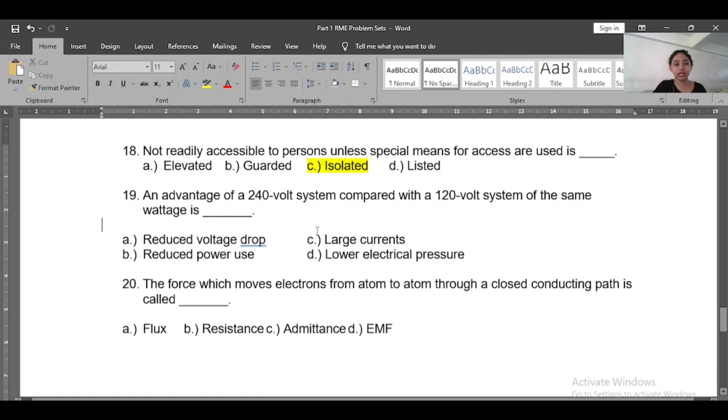We have nineteen: An advantage of a 240-volt system compared with a 120-volt system of the same wattage is - A) reduced voltage drop, B) reduced power use, C) large current, D) lower electrical pressure. So if we have a 240-volt system compared with 120-volt system, it will reduce the voltage drop.